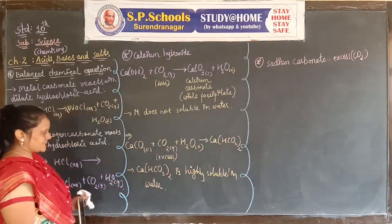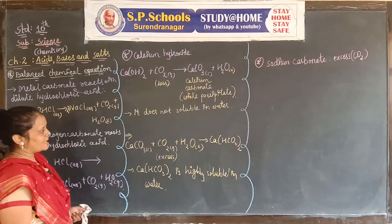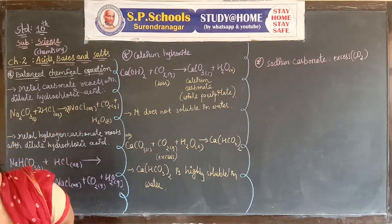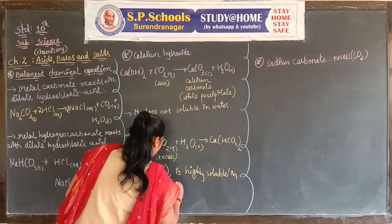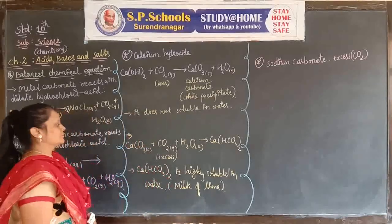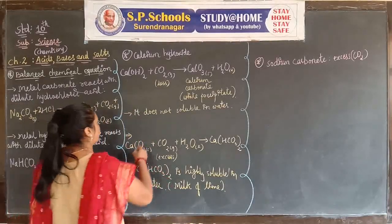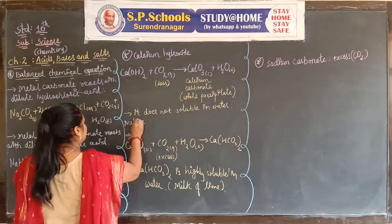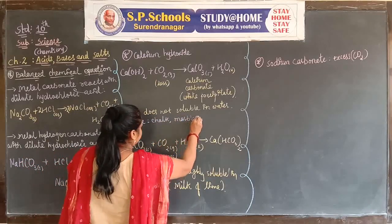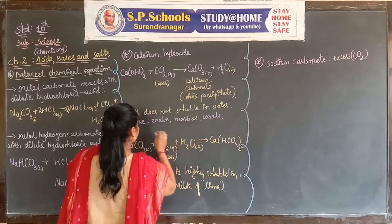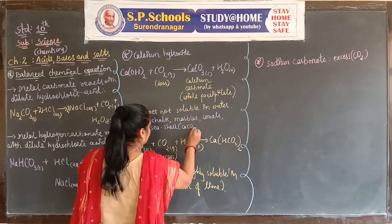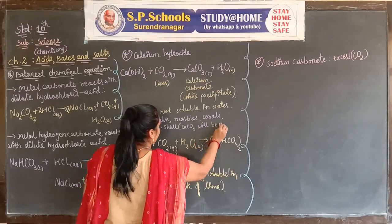When we pass excess amount of carbon dioxide, calcium bicarbonate Ca(HCO3)2 is formed. Calcium carbonate is found in nature in the form of chalk, marbles, corals, and sea shells — CaCO3 is seen in various natural forms.